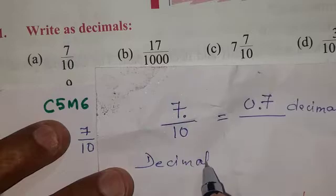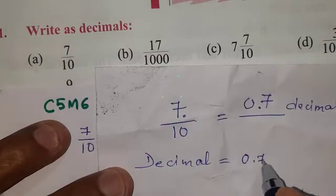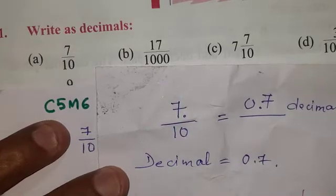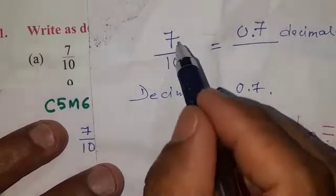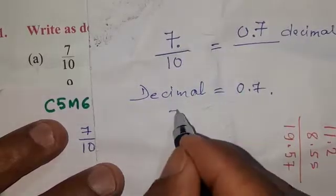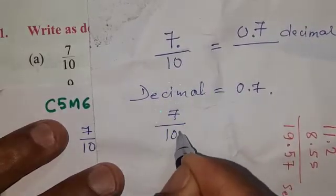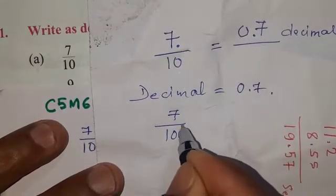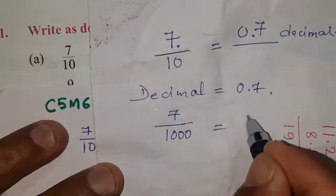Decimal 0.7 — how is this a decimal? The number 7 divided by 10. There is one zero in 10, so we place one digit after the decimal point. The answer is 0.7.